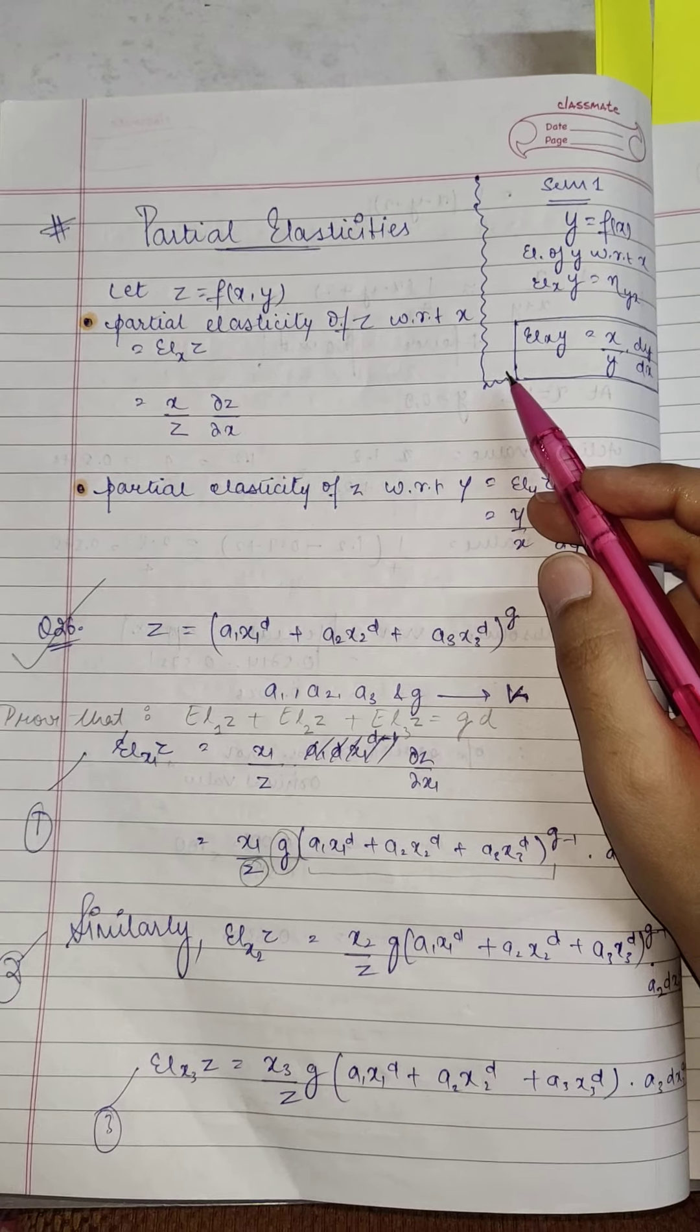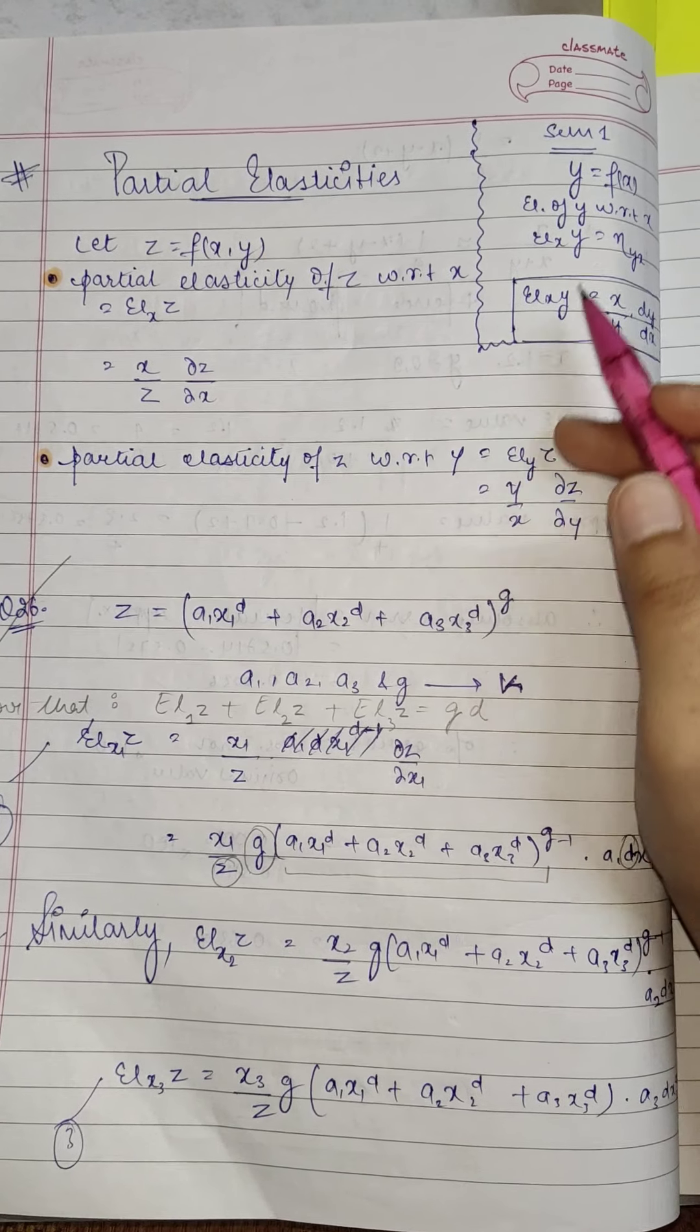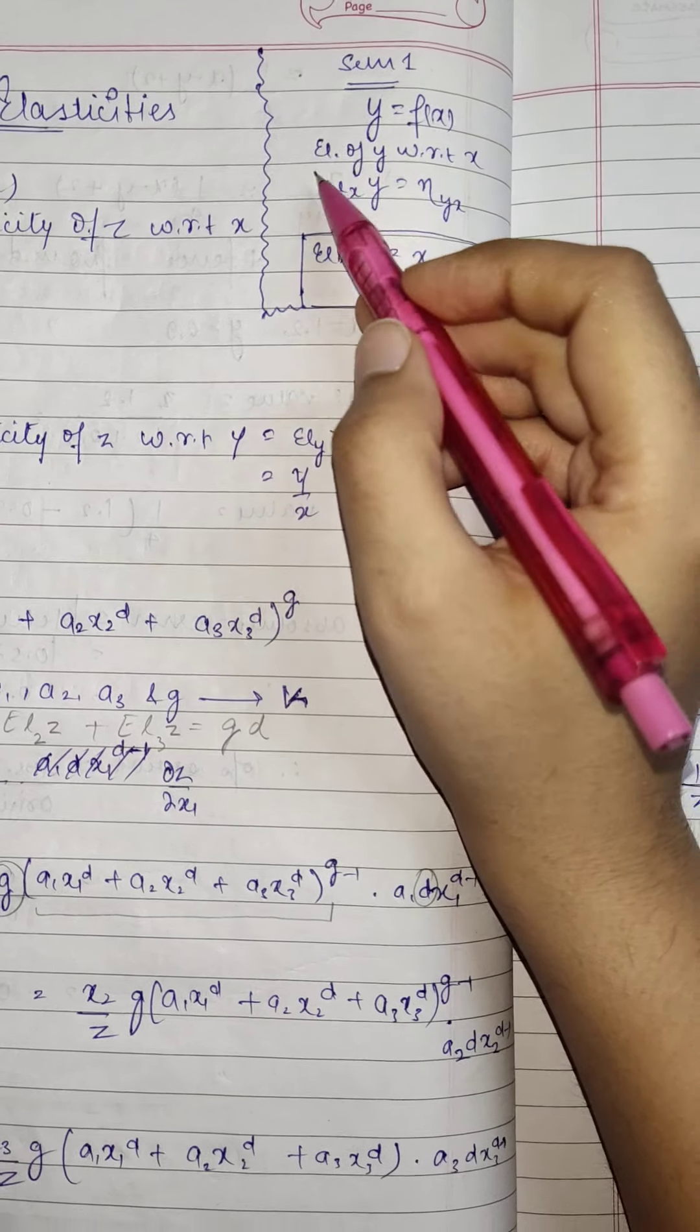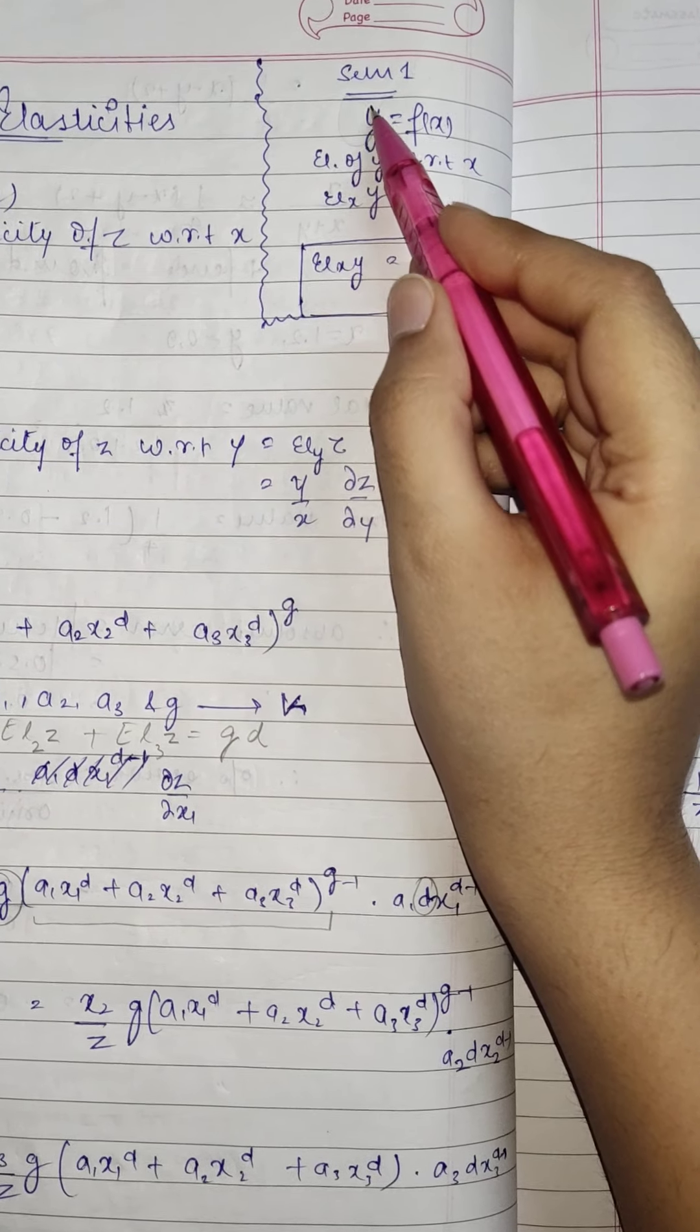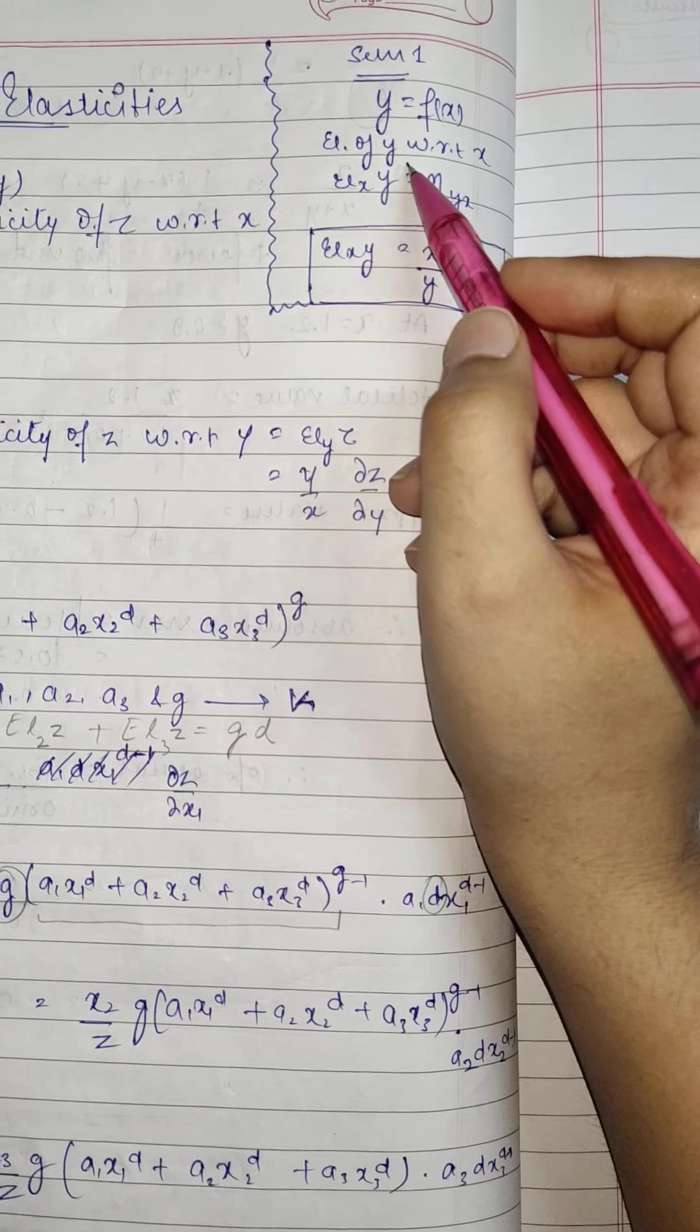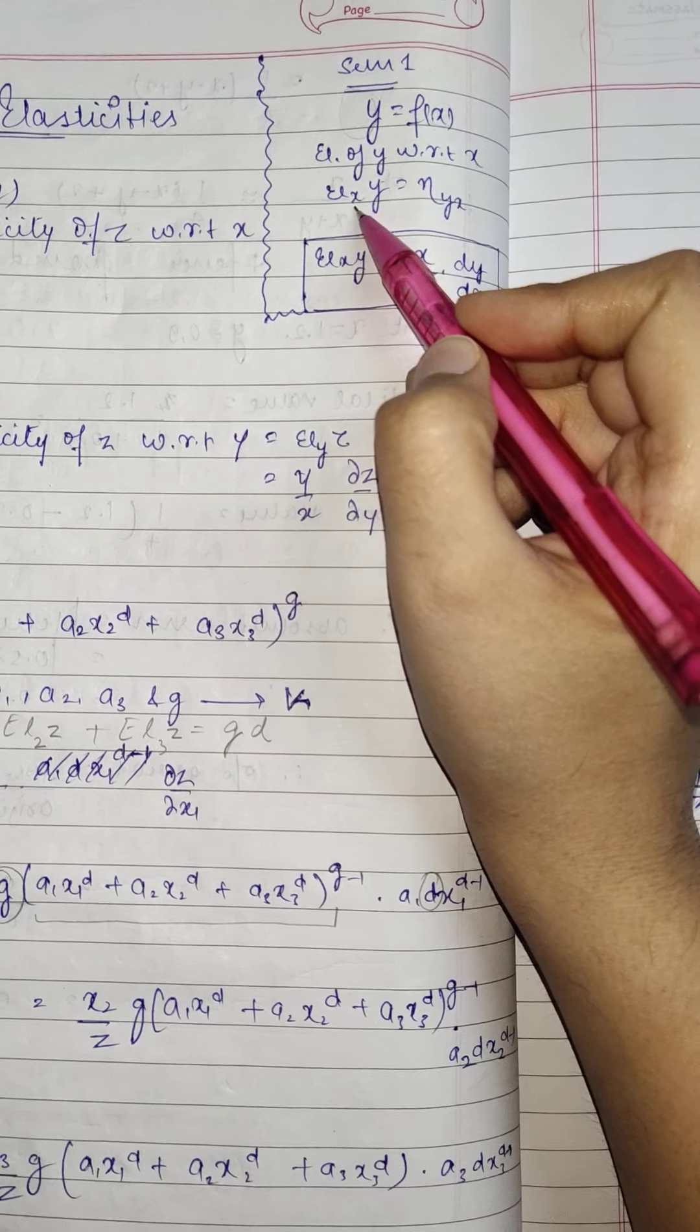If you remember the classic formula of elasticity when you have a function of one variable, so basically y is a function of x, then elasticity of the dependent variable, which is y, with respect to your independent variable x was written as elasticity of y with respect to x.